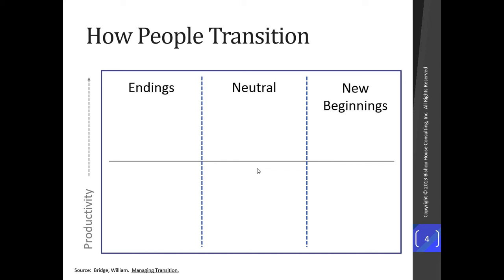Those three phases are: first, the Ending Zone, where people are coming to terms with the fact that things are changing — an initial reaction of trying to understand what they need to let go of, how it affects them. Then they move into the Neutral Zone, where they spend most of their time, and where the change becomes real for them as they navigate through it. Eventually they see the light at the end of the tunnel, reaching New Beginnings, where people start accepting and integrating themselves into that new future state.